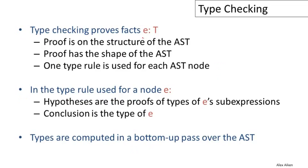To summarize, type checking proves facts of the form 'E has type T.' Notice that this proof is on the structure of the abstract syntax tree. For the expression one plus two, we prove something about it by first proving something about each sub-expression. We prove the sub-expressions had type int, then we managed to prove the whole thing had type int.